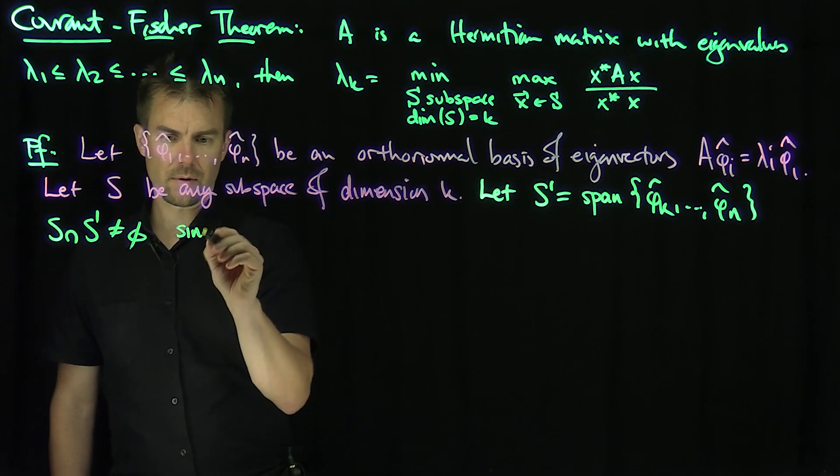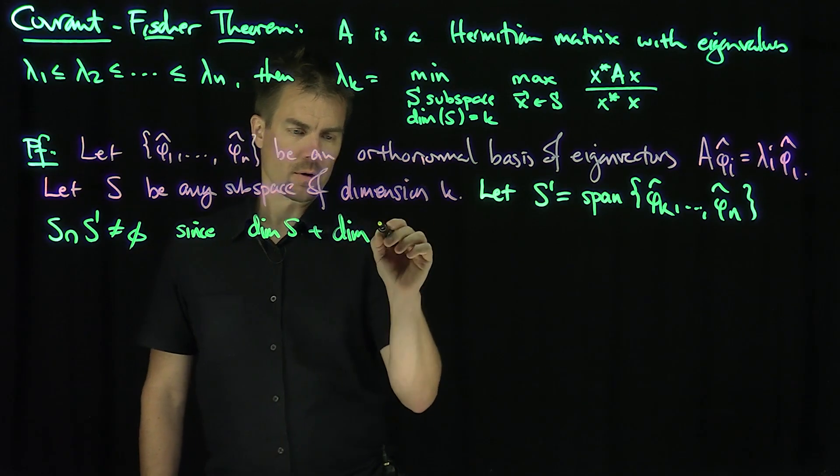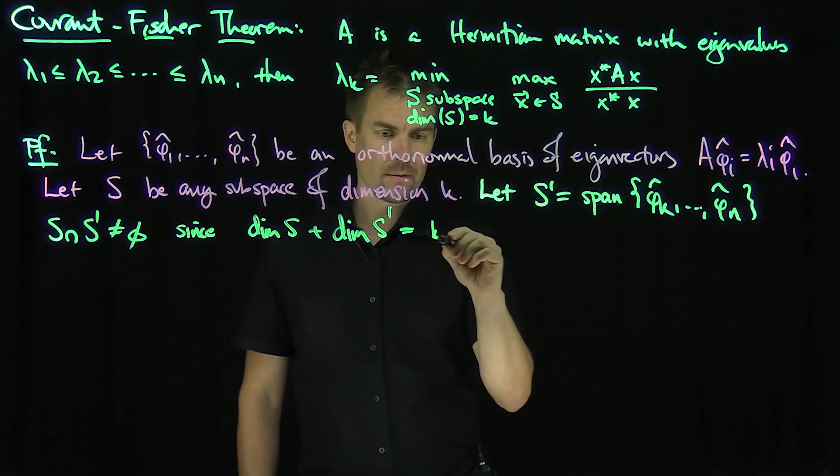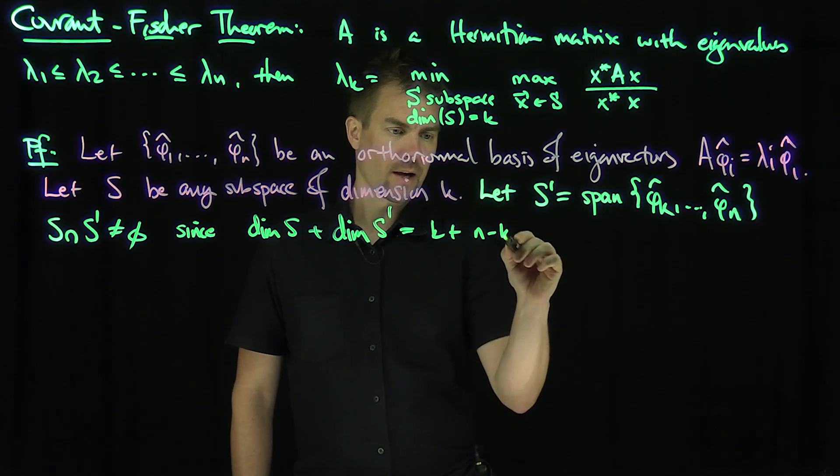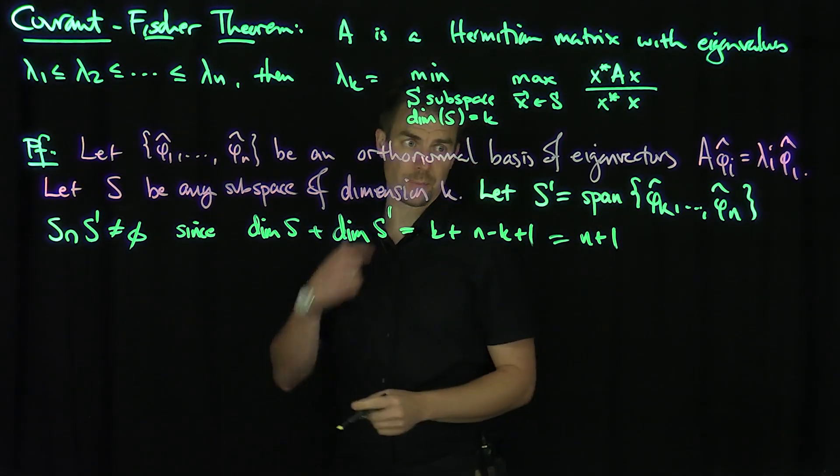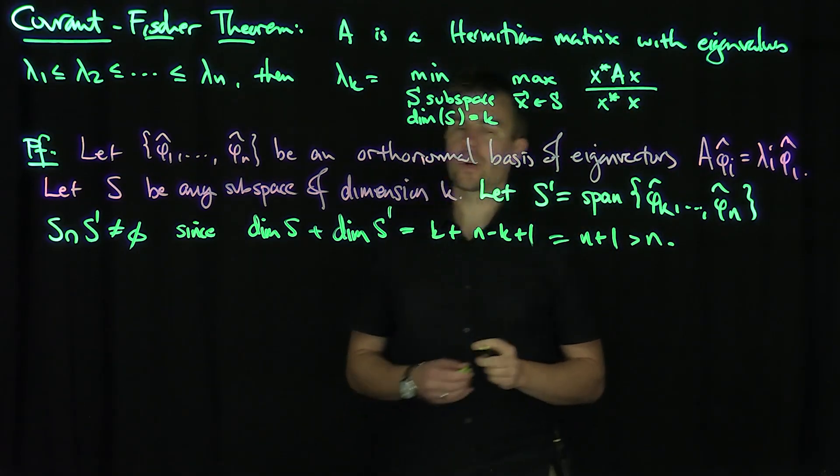since dim(S) + dimension of S' = k + (n - k + 1), which is n + 1, and that's bigger than the entire matrix space. So in other words, that's strictly bigger than n. So there's non-empty overlap.